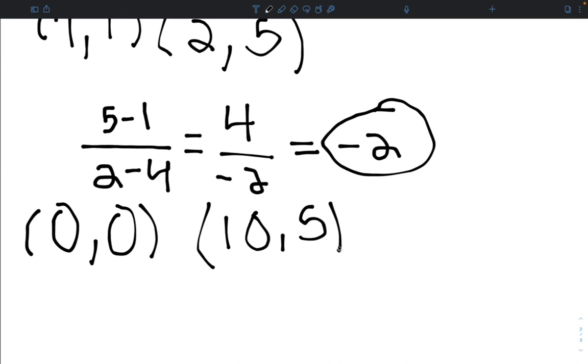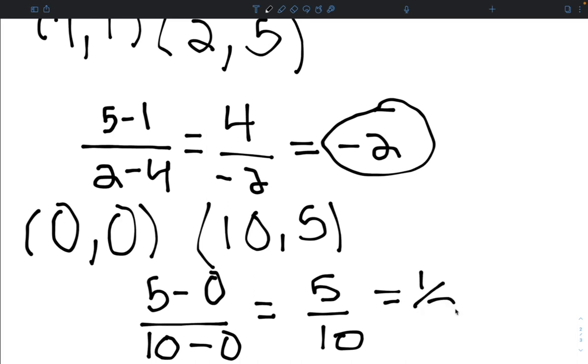And now we're just going to repeat the process that we did in the example above. So y2, which is 5, minus y1, which is 0, over x2, which is 10, minus x1, which is 0. 5 minus 0 is 5, and 10 minus 0 is 10. And we can simplify this into 1 half. So our slope is 1 half.